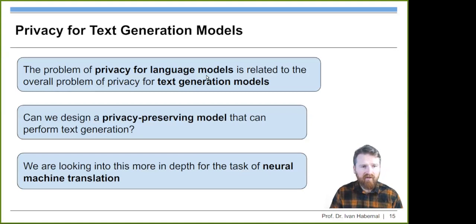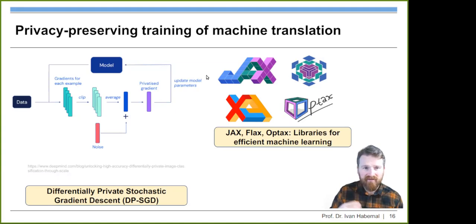You're given a couple of words, it could be a prompt. And then given this context, it predicts what is the most probable next words to continue the sequence. Basically the probability distribution over the vocabulary. The actual model for estimating probabilities could be something from very simple N-gram models to transformer models like GPT. The problem of privacy for language models is actually related to the problem of privacy for text generation models, because that's nowadays the state of the art of text generation. Language models are generation models.